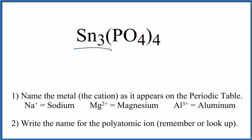To write the name for Sn3(PO4)4, first we're going to write the name for the metal as it appears on the periodic table. So Sn, that's tin.